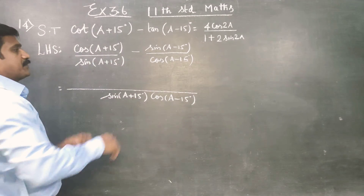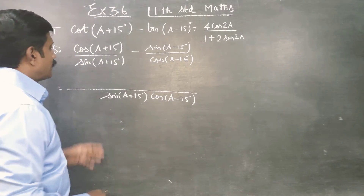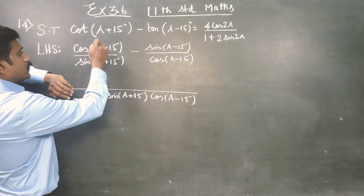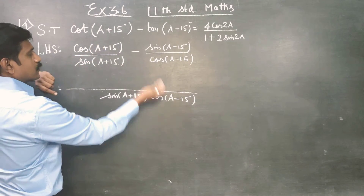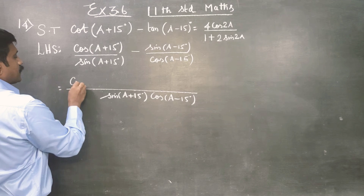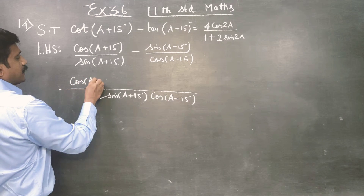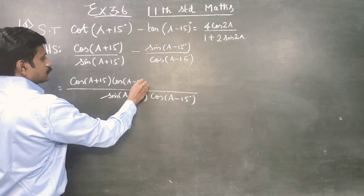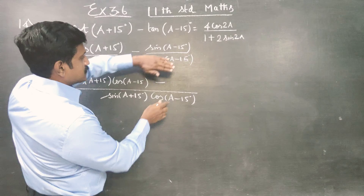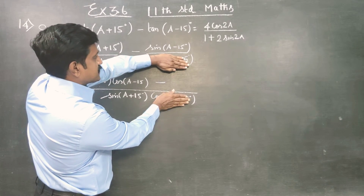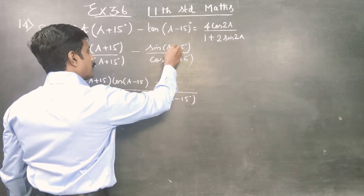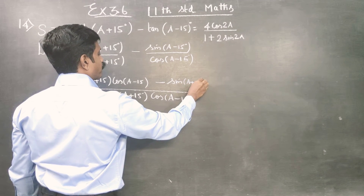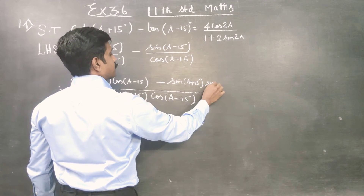Now, cos is on the denominator. After simplification, we have sin(a-15) sin(a+15) sin(a-15) in the denominator.